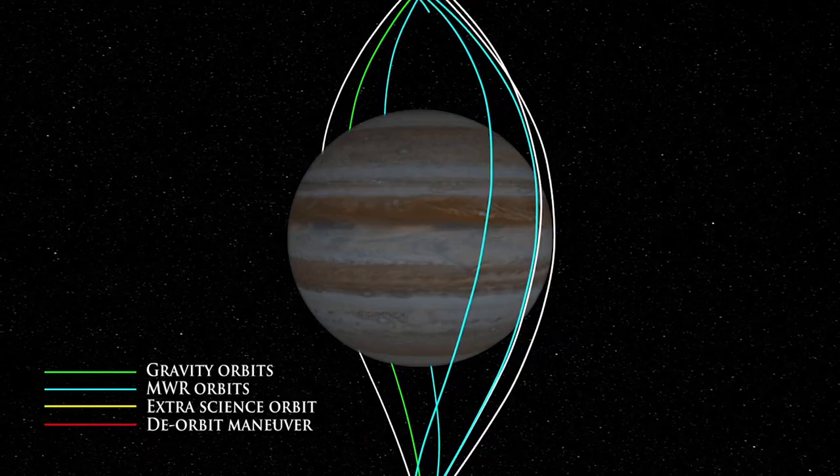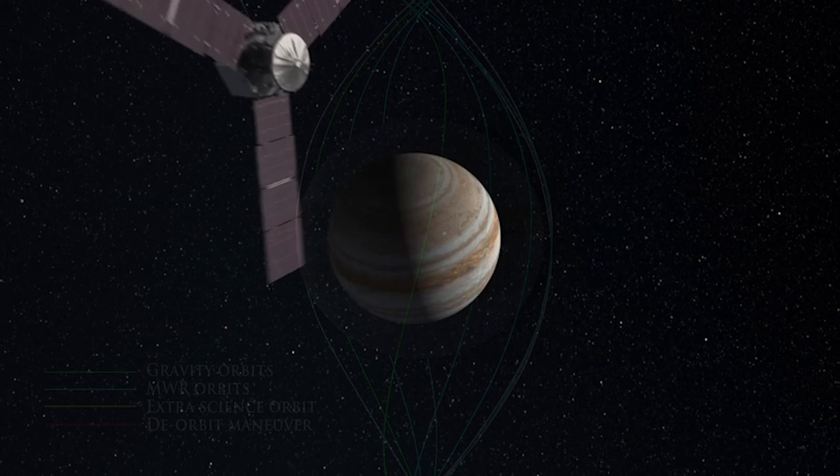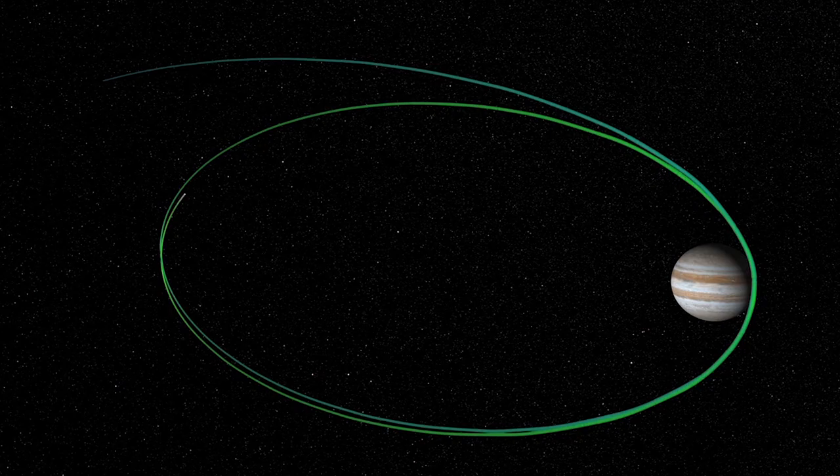The mission is designed to basically wrap Jupiter in a dense net of observations, completely covering the sphere. So to do that we need a polar orbit, one that passes over the North Pole, along a line of longitude and over the South Pole.